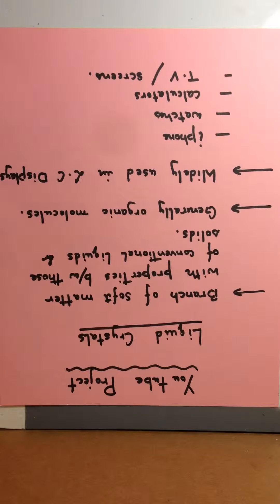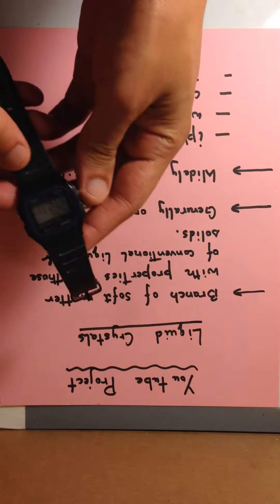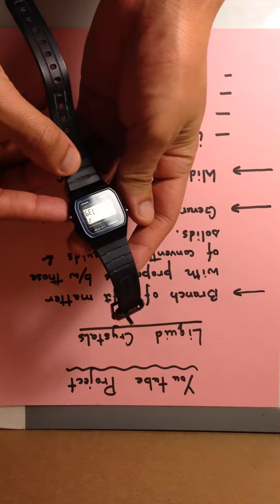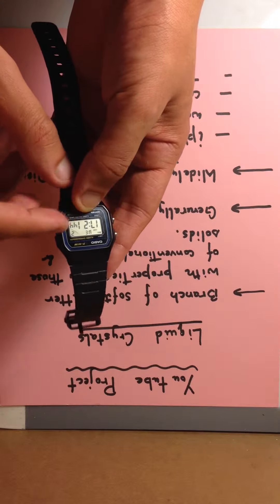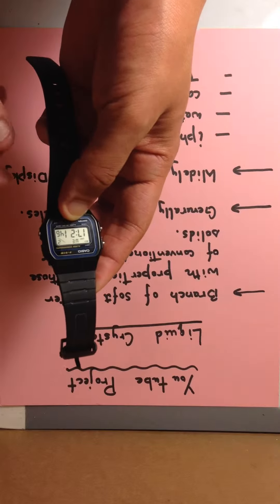So I have here a few examples. This is an example of a digital watch—it's a basic watch with a simple LCD display. I'm going to talk about how it works a little bit later.